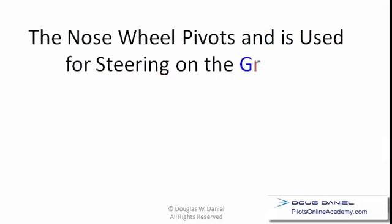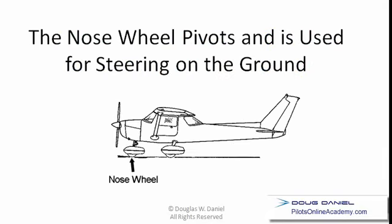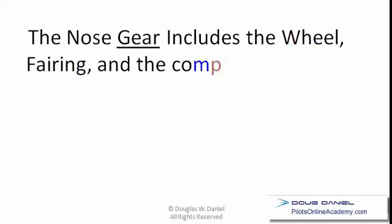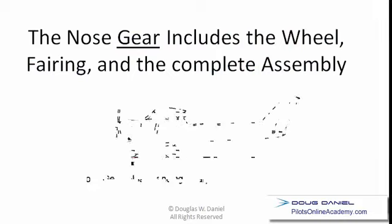The nose wheel pivots and is used for steering on the ground. The nose gear is a term that includes the wheel, the fairing, the nose wheel strut, and the whole complete assembly.